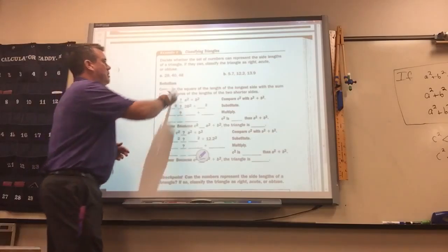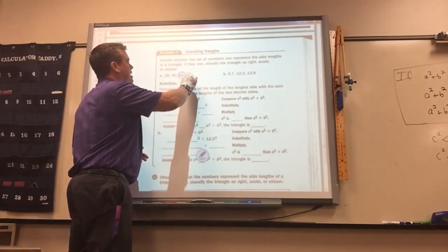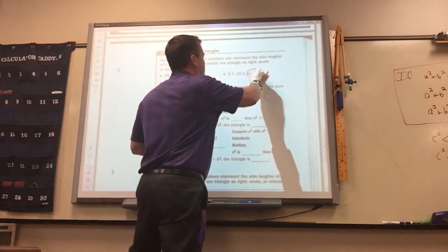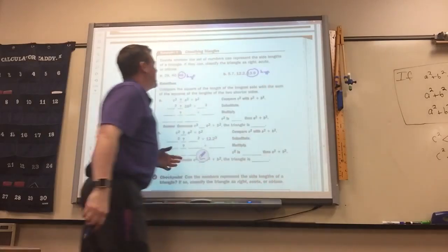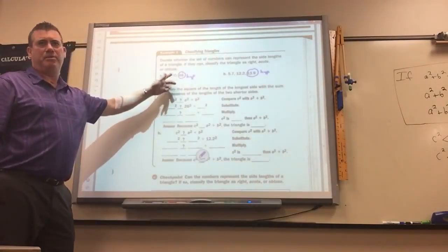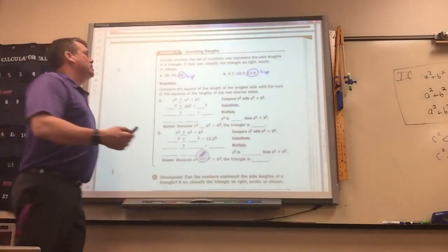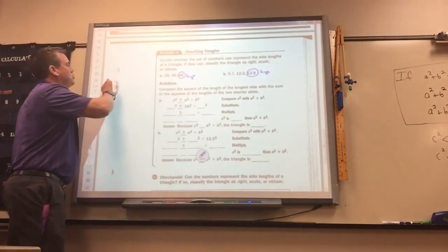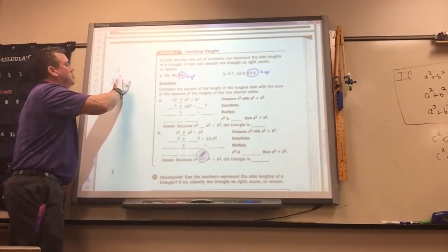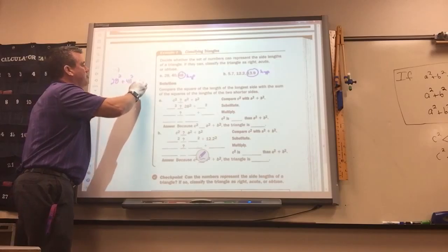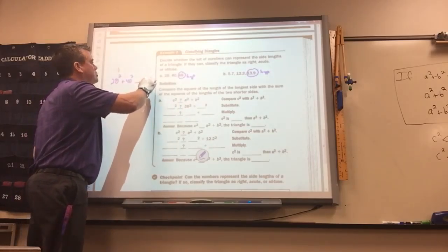These happen to be. Here's the longest side so that's the hypotenuse. Here's the longest side so that's the hypotenuse. But sometimes they put the longest side in the middle or the first one. So what you've got to do is take 28 squared plus 40 squared and figure out how does it compare to 48 squared.